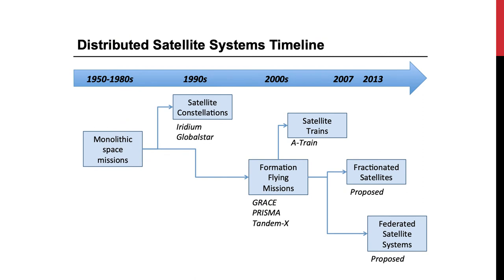Constellation architectures are the most well understood and more studied among distributed satellite systems, but certainly not the only ones. Starting at the end of the 1990s and certainly in the 2000s, other distributed satellite concepts came to existence. Among these are the so-called formation flying missions such as GRACE, PRISMA, and TanDEM-X, and satellite trains such as the NASA A-train. In 2007, a famous program on fractionated satellites appeared called System F6, sponsored by DARPA, the American Defense Advanced Research Projects Agency. Unfortunately, no fractionated concept ever made it to the launch pad.